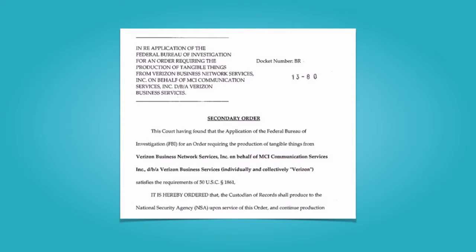The court came under intense public scrutiny again in 2013 when a top-secret court order requiring Verizon to provide a daily, ongoing feed of telephone call metadata to the NSA was leaked to the media by defense contractor Edward Snowden. A detailed description of the court, its history, powers, composition, and criticisms may be found in Wikipedia, which is one of your class readings.